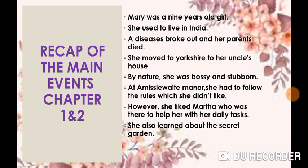Mary Lennox is the main character of the novel. She was a 9-year-old girl. She used to live in India with her parents, but a disease broke out there and as a result her parents died. So she had to move to Yorkshire to her uncle Archibald Craven's house. By nature, Mary was a stubborn and bossy girl. She was bossy and stubborn because in India she spent most of her time around servants and she used to boss them around all the time, which made her bossy.